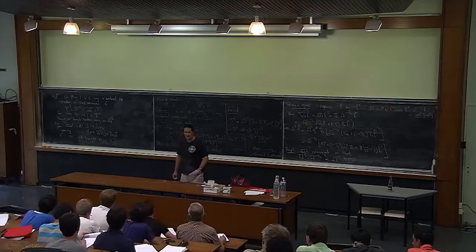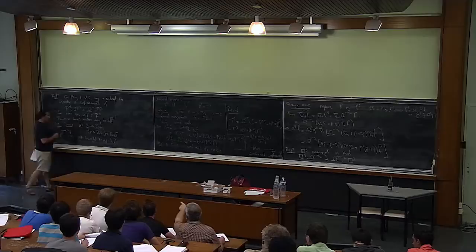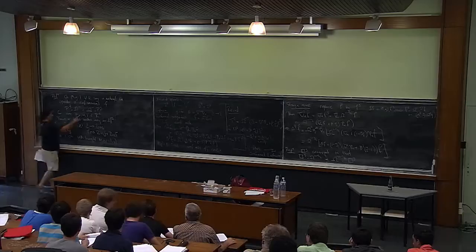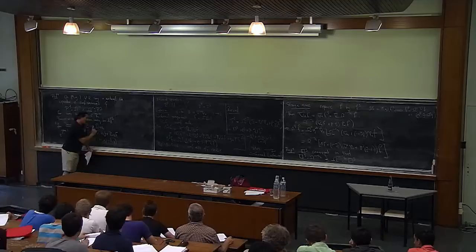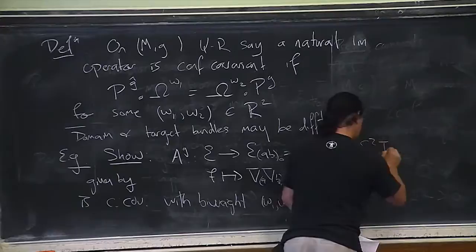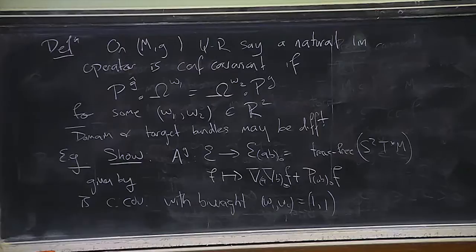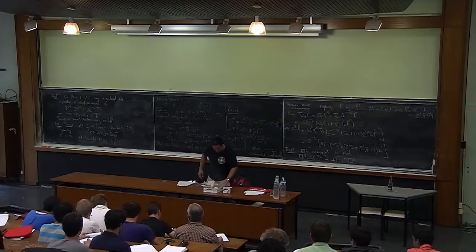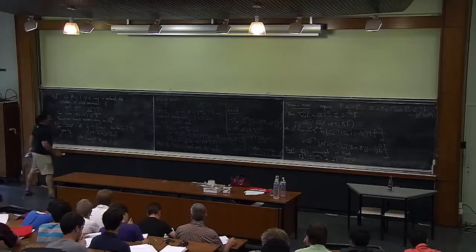Here's an exercise: show that the operator A_G mapping functions to symmetric trace-free two-tensors, given by f mapping to the trace-free Hessian of f plus the trace-free part of the Schouten tensor times f, is conformally covariant with weights w_1 = w_2 = 1. This notion of conformal covariance has been used a lot for dealing with conformal operators.